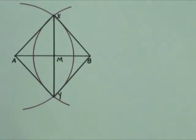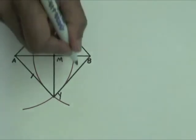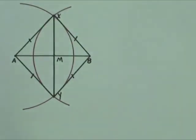Since AX, AY, BX, and BY are radii of circles that were drawn using the same compass width, AX, AY, BX, and BY are congruent.